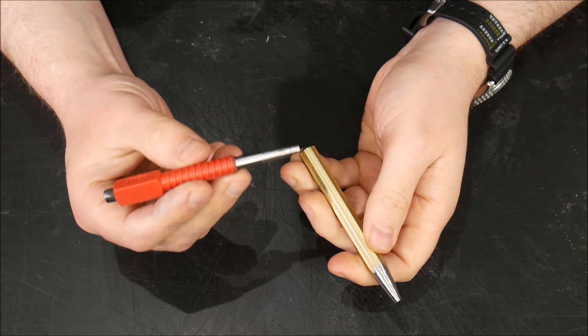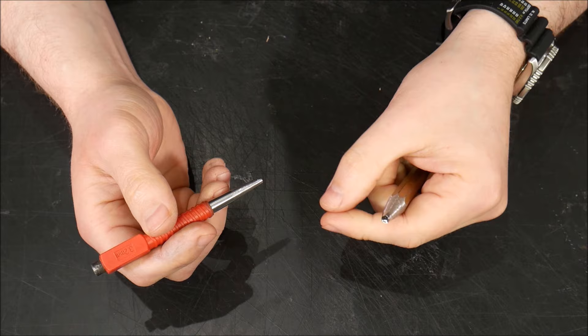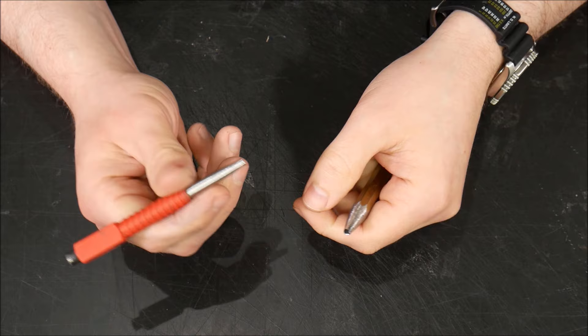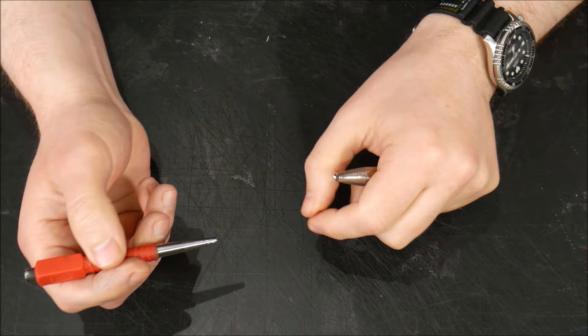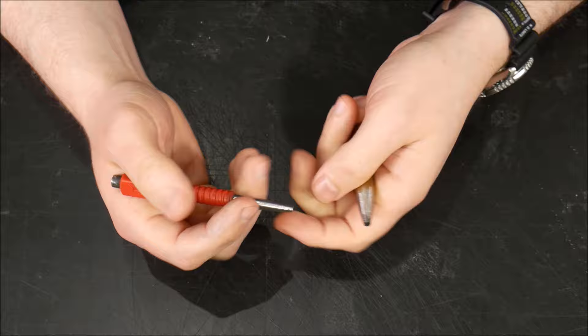So in carpentry, whenever you bang a nail in, sometimes you want it to sit below the surface. So what you do is you get a nail setter, put it over the head of the nail, and then use a hammer to bang the nail below the surface, and then you can fill it in with wood filler and paint it, and you wouldn't know there was a nail there.